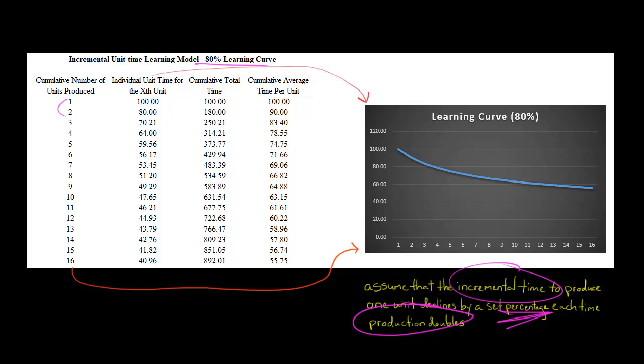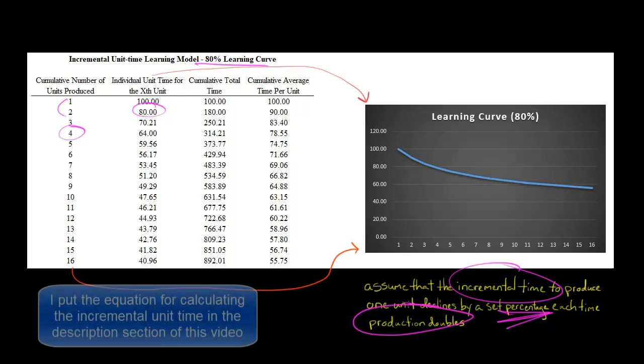So then we are assuming that to make that second unit, we already made the first one. It took 100 hours. To make that second unit is now going to take 80% of the time that it took to make the one before. And then when we get to the fourth one, we're doubling production again. 80% of before - before we were talking about 80. Before production, when we just made two units, and now we make four units, we get to that fourth one. The incremental cost to go from three to four is going to be 64 hours.